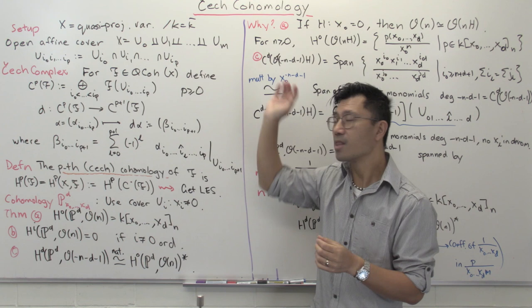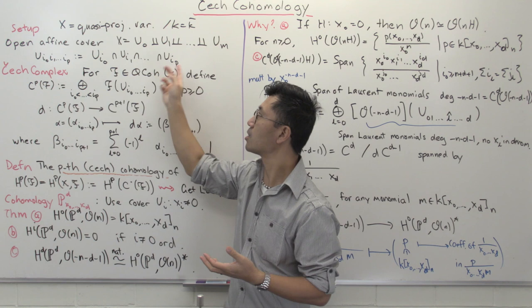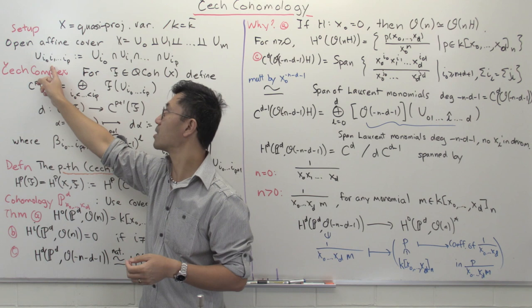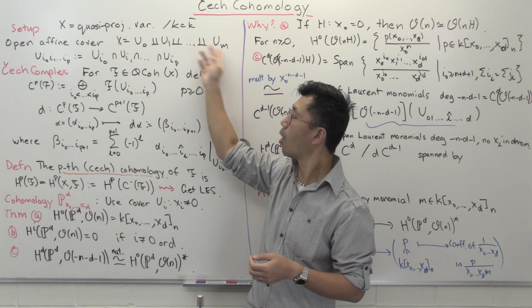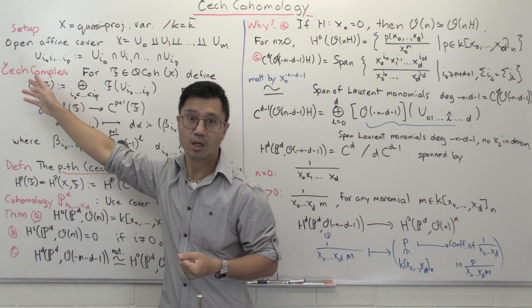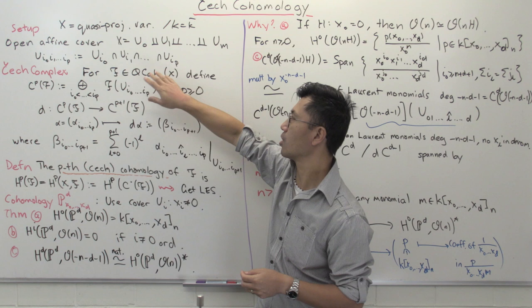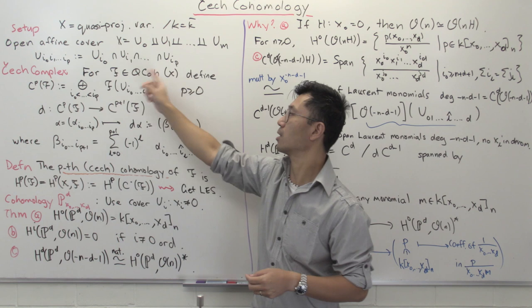Just as in the dimension one case, we construct a Čech complex that uses intersections of these open sets. If we pick indices i₀ up to iₚ, then U subscript i₀…iₚ is the intersection of the corresponding open affines in the open affine cover. You can define this Čech complex and Čech cohomology for arbitrary sheaves, but it won't give you the actual sheaf cohomology unless you're in the situation where you have a quasi-coherent sheaf.